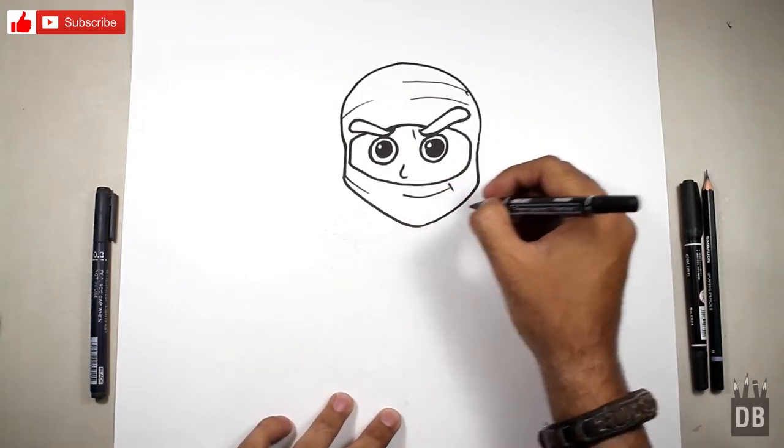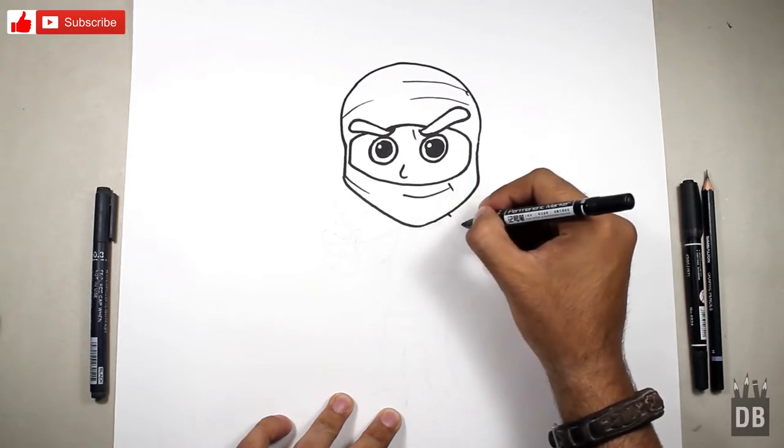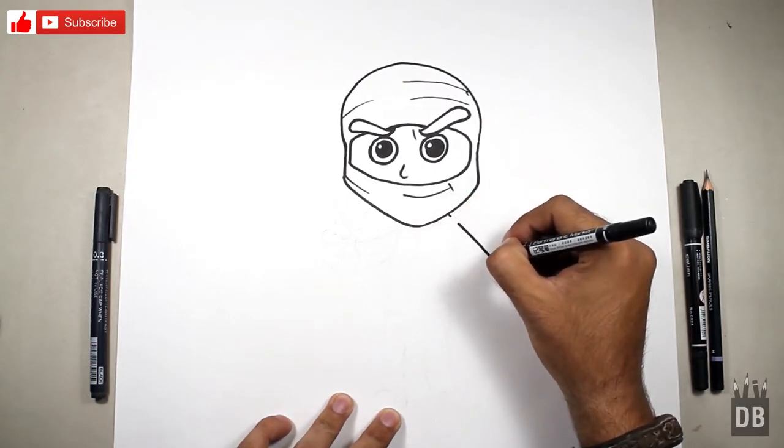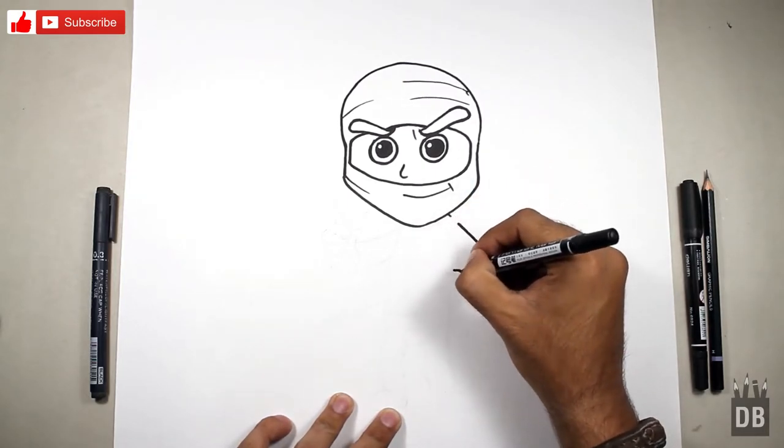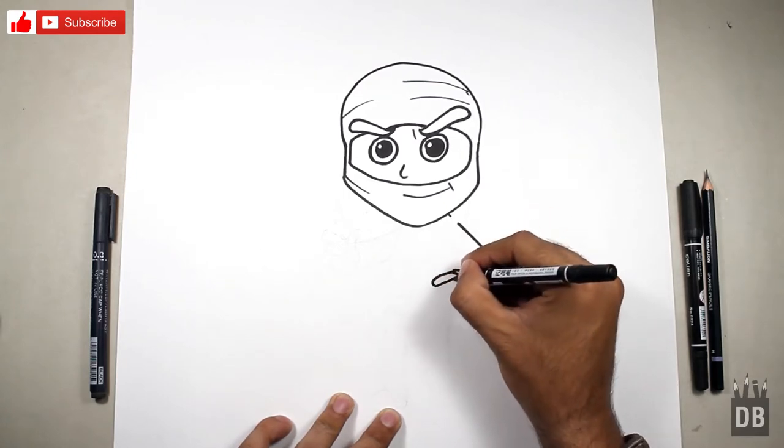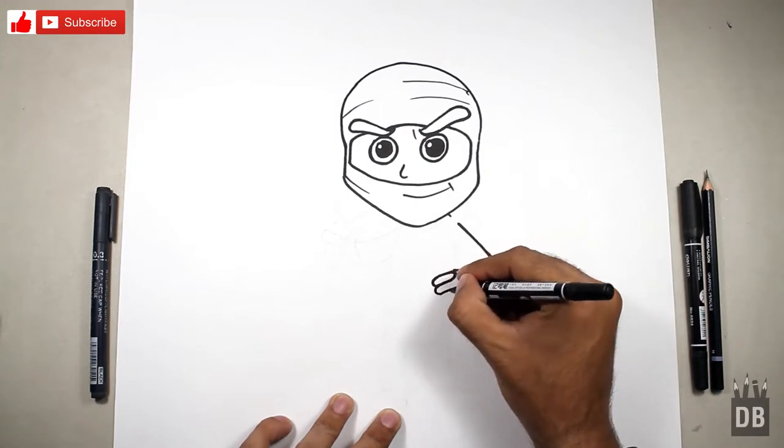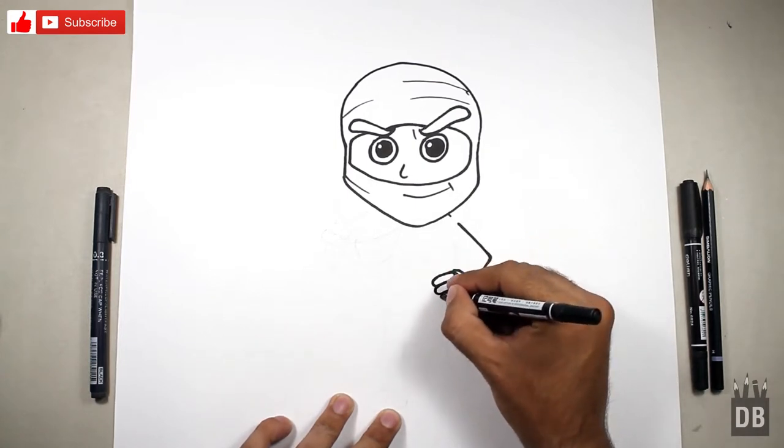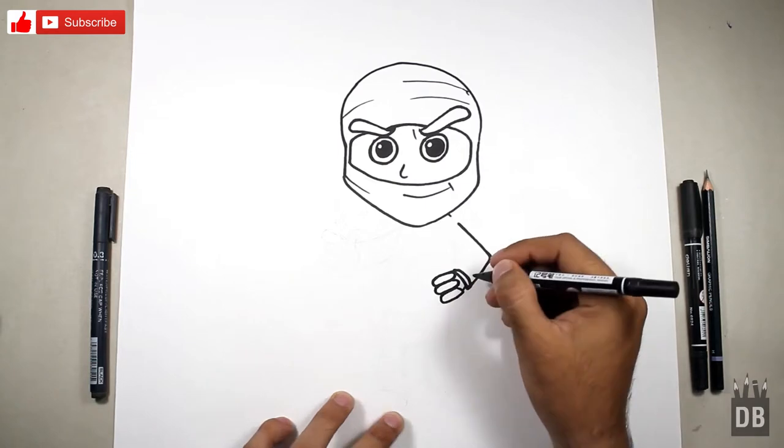For the body we will make the hand. He is in standing pose. This is for the fingers, make curves and it will look like he is holding something.